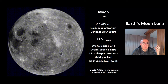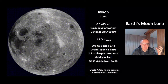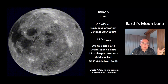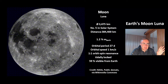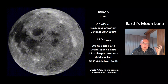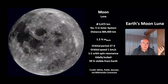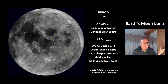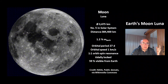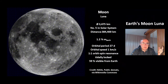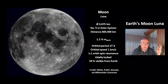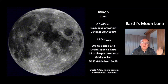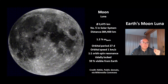This means the Moon is tidally locked to the Earth, and from Earth we always see one side of the Moon. But since the orbit of the Moon is slightly eccentric, we can see more than 50% of the surface — we can see 59% from Earth.